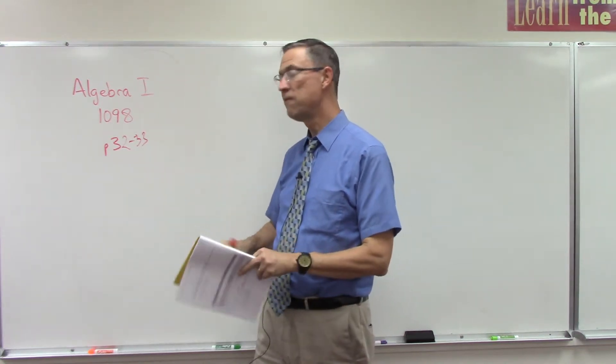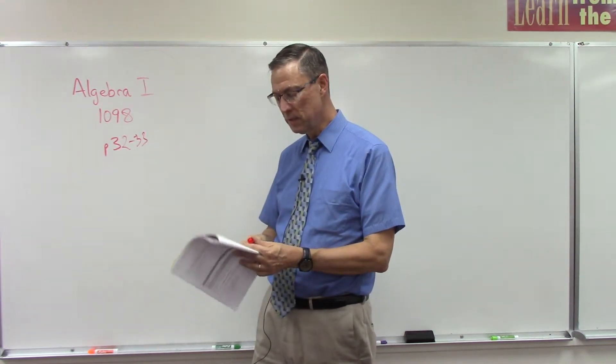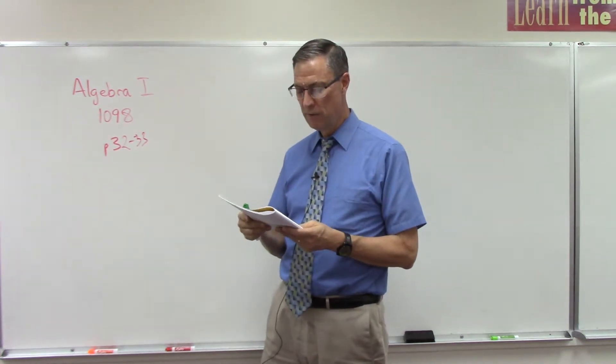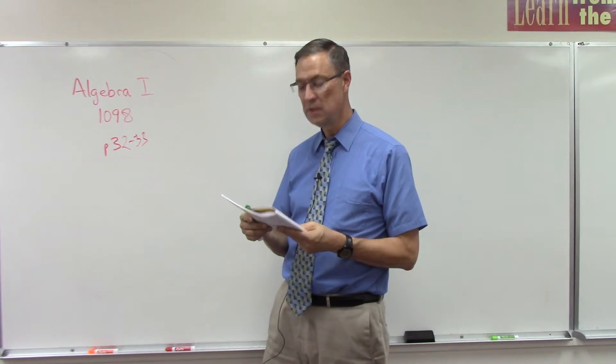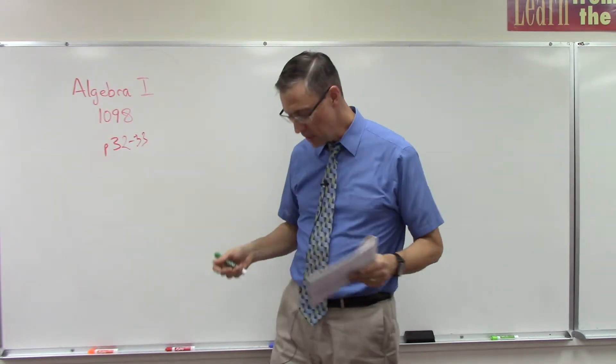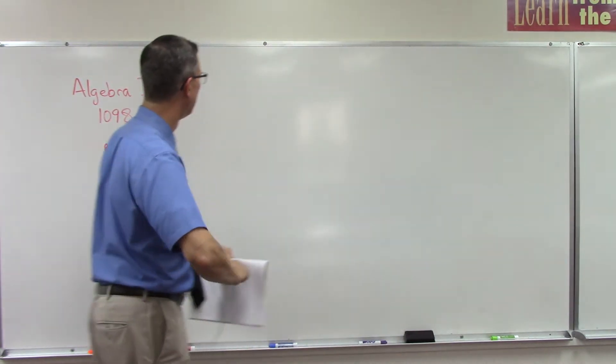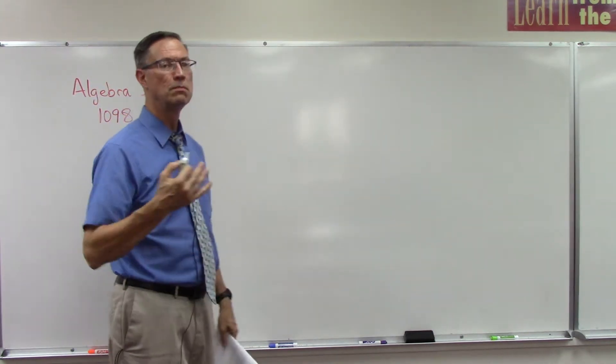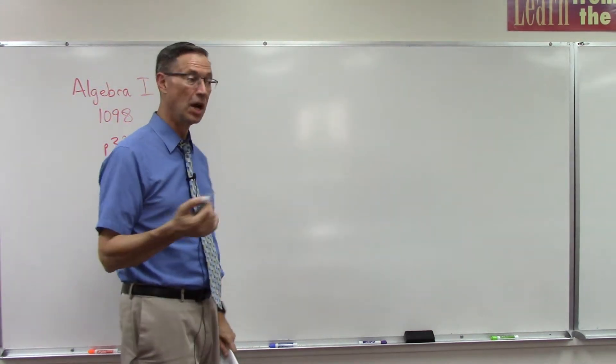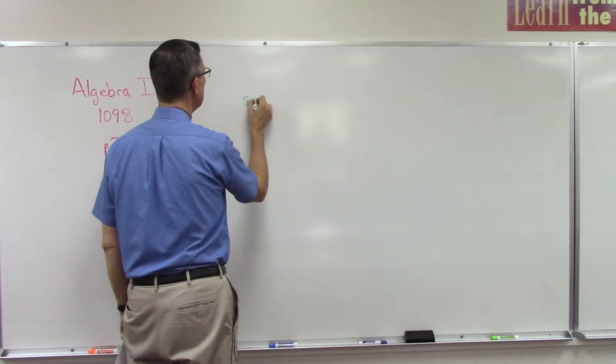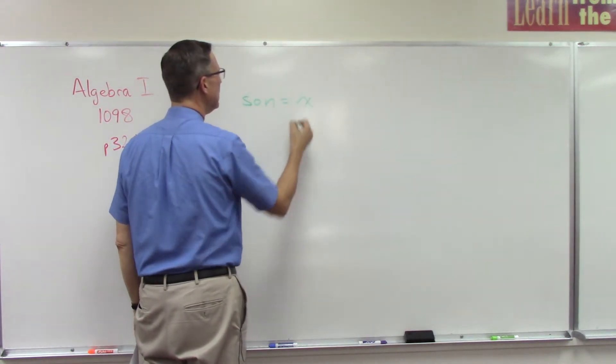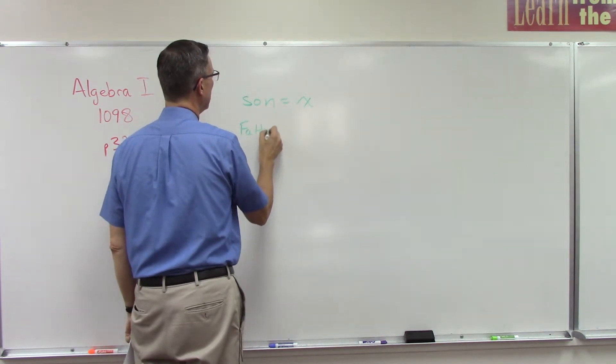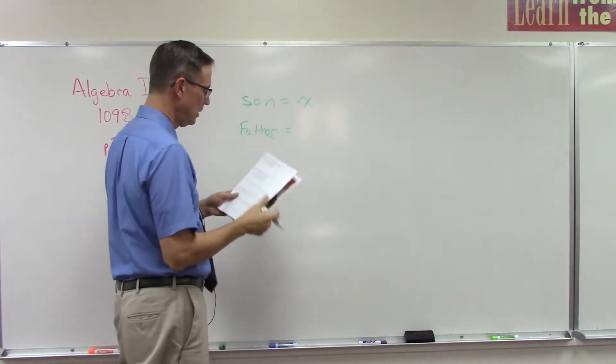Let's look at number four. A father is seven times as old as his son. The sum of their ages is 56. What is the age of each? What I find helpful is to always think which is the smaller one - obviously the son, right? The son is the smallest age, so we'll let him represent x.